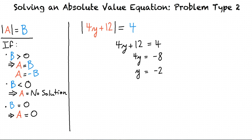Now we can solve the equation set equal to negative 4, written as 4y plus 12 equals negative 4. If I subtract 12 from both sides again, then the result is 4y equals negative 16. Now I divide both sides by 4 for a result of y equals negative 4. We see here that the two values of y that make this absolute value equation true are negative 2 and negative 4.